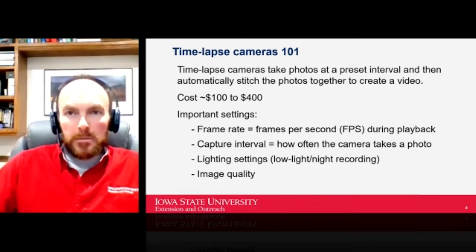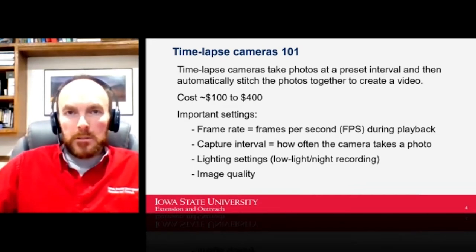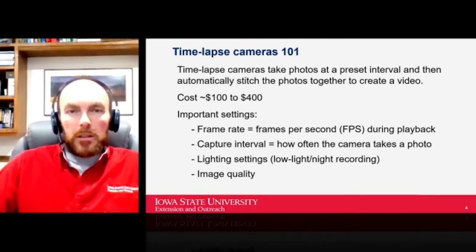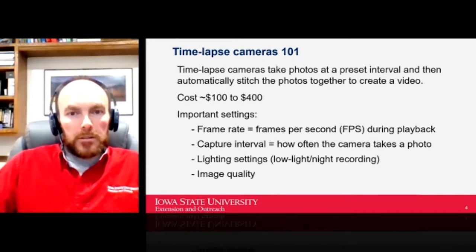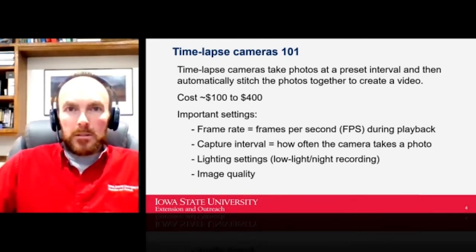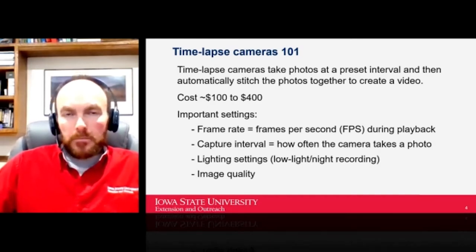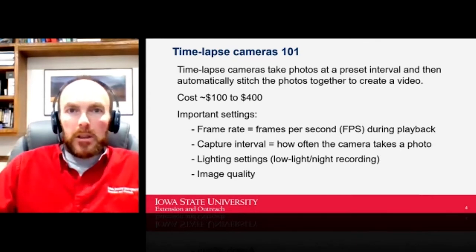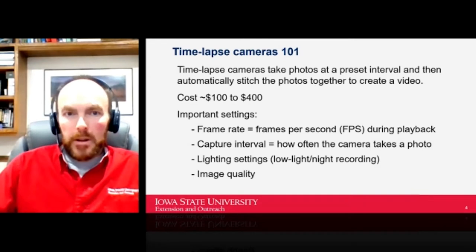There are a few important settings most of these cameras have. The frame rate is how many images per second are stitched together during playback. The capture interval is how often the camera takes a photo. Light settings are quite important if you want to use cameras at night — there are low light or night recording settings you'll need to turn on. Image quality is also important: higher quality means larger file size.